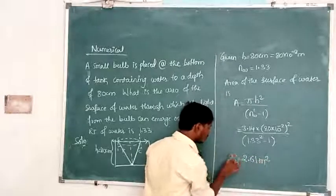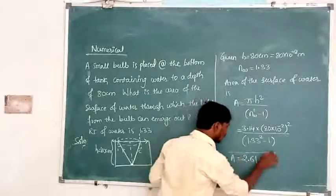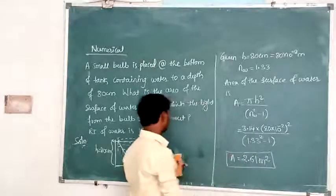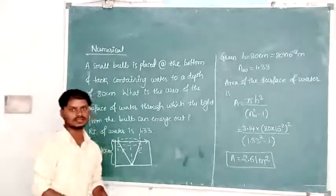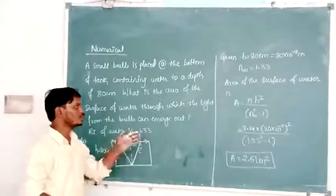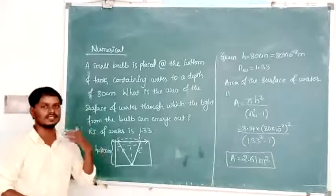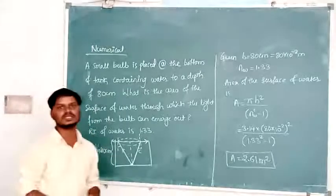Through this much area — 2.61 m² — the light from the bulb can emerge out. This completes the problem related to the world seen by the fish.